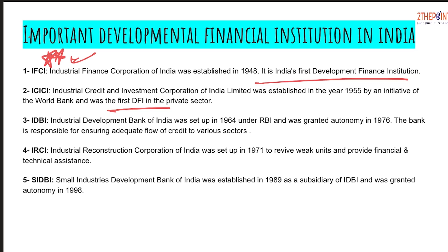Then comes IDBI, set up in 1964 under the RBI and granted autonomy in 1976. It is responsible for ensuring adequate flow of credit to various sectors. Next is IRCI, which was formed with the objective of reviving sick industrial units and providing them funding so they do not go bankrupt — because when a company closes, many people lose employment and there is significant loss to society.